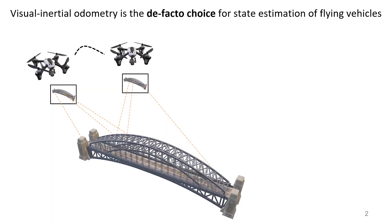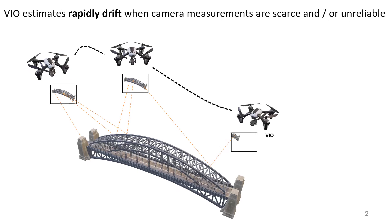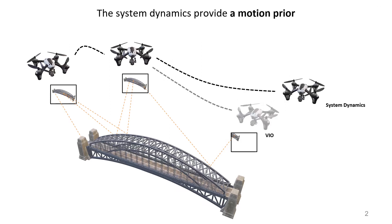Visual Inertial Odometry is the de-facto choice for state estimation of flying vehicles. The accuracy and robustness of VIO systems mainly depends on the visual inputs. When camera measurements are not reliable, VIO systems accumulate drift. To improve the performance, a motion prior derived from the robot dynamics can be used as an additional constraint in the state estimation process.